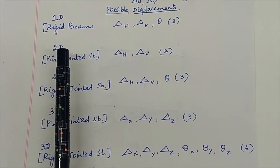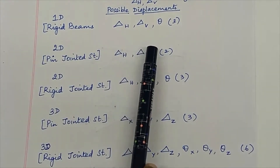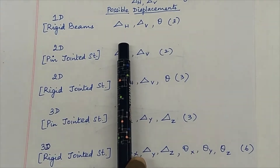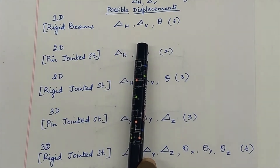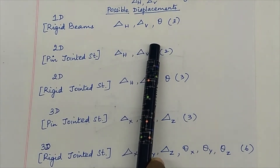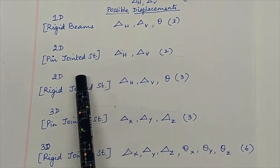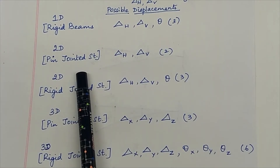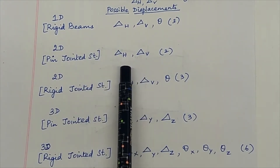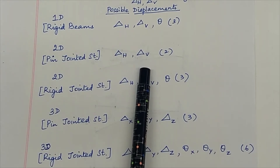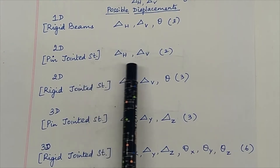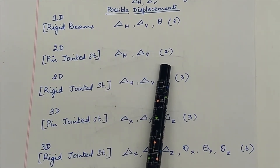For a one-dimensional rigid beam, delta h, delta v and theta are all possible — delta h is horizontal displacement, delta v is vertical displacement, and theta is rotation. These three are possible at all joints in a rigid beam. In case of a two-dimensional pin jointed structure, delta h and delta v, that is horizontal displacement and vertical displacement, only two types of displacements are possible at all joints. Since the joints are pin jointed, it releases the moment and no rotation takes place. So for a pin jointed two-dimensional structure, the number of possible displacements at any joint is two.